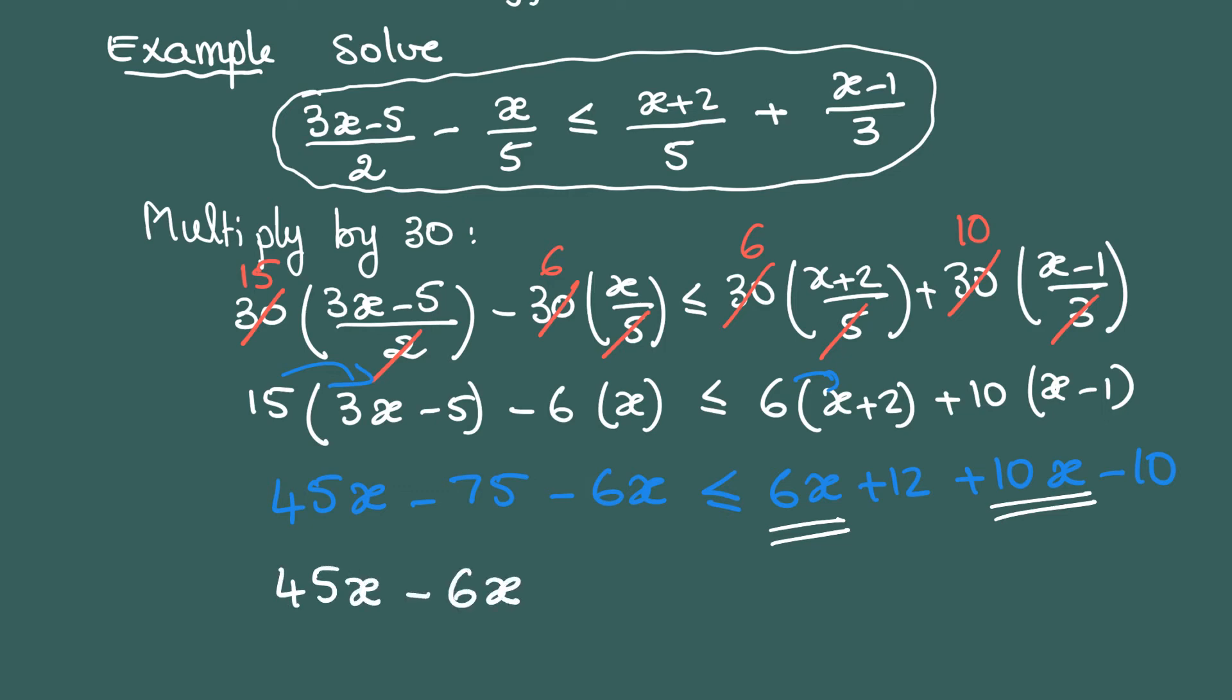This 6x I will bring to the left hand side and change its sign to -6x. Same thing for the 10x, I'll bring it to the left hand side and it becomes -10x. It's just a shortcut, really.